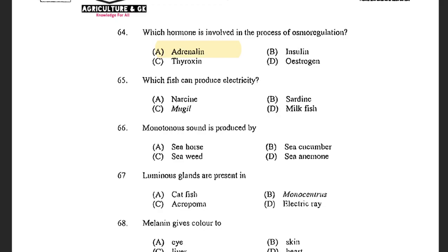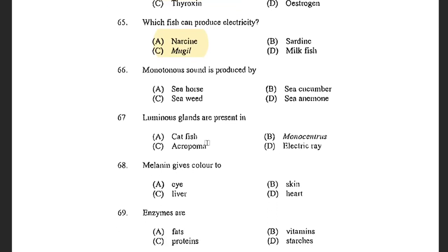Next question: Which fishes can produce electricity? Options are Nason, Sardine, Milkfish, and Mugil. The answer is Nason. Next question: Monotonous sound is produced by — options are Seahorse, Sea Cucumber, Seaweed, and Sea Animal. The answer is Seahorse. Seahorse makes clicking and groaning sounds when they are stressed out and also in association with feeding and courtship.